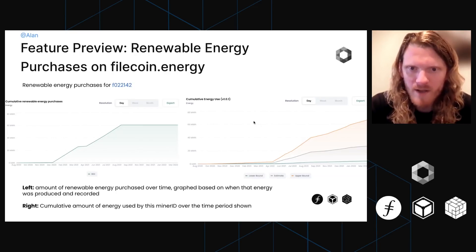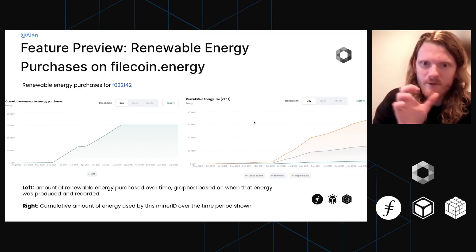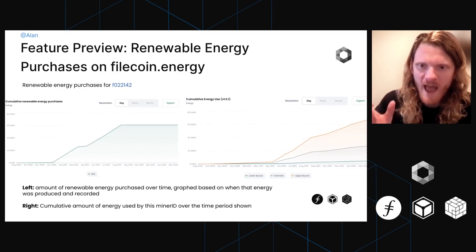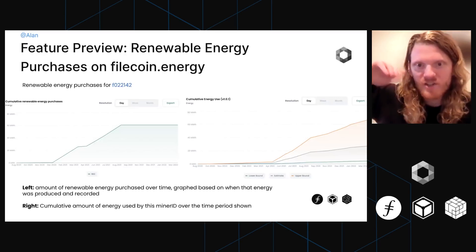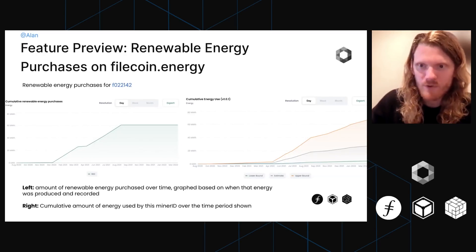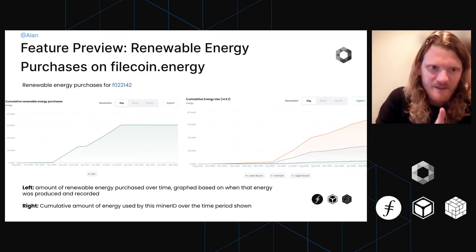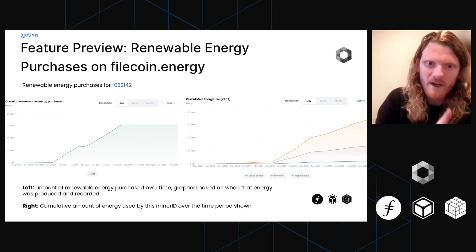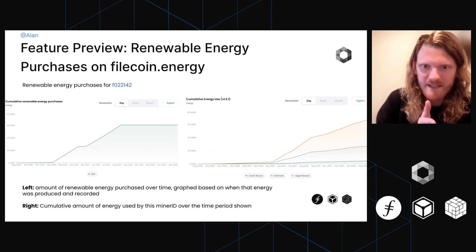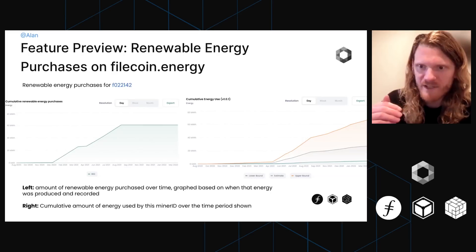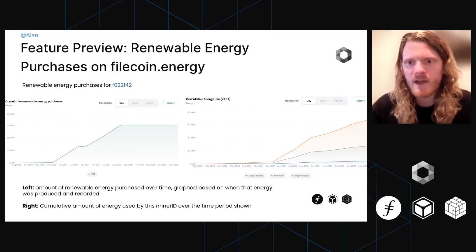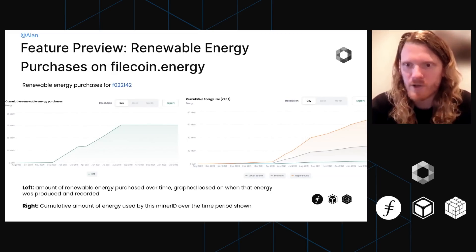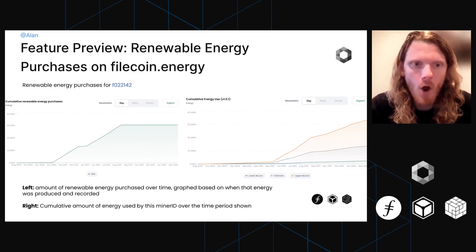You're going to be able to select a period of time and select either the entire network or an individual storage provider, and see how much energy in sum they have used over time. That's going to be really useful when we combine it with the graph on the left, which shows the amount of renewable energy that has been purchased by the storage provider over time. We're going to be able to show graphically and very easily what is the ratio between the amount of energy that you've used and the amount of renewable energy that you've purchased — whether a storage provider is running at 100%, 150%, or 50% renewable energy over a given time period.